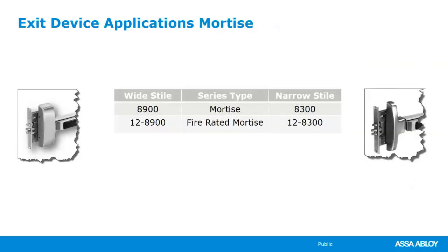For mortise applications: the wide style is the 89, fire-rated version is 12-89. The narrow style is the 8300 or 12-8300. Note that the 8300 uses a full-size mortise lock — not a narrow-style mortise lock — so it cannot be used on aluminum storefront doors unless the door has a very wide stile. The reason to offer the 8300 narrow-style-looking mortise device is for architectural sight lines — if you want mortise devices near rim devices on an exterior area and want them to match visually.